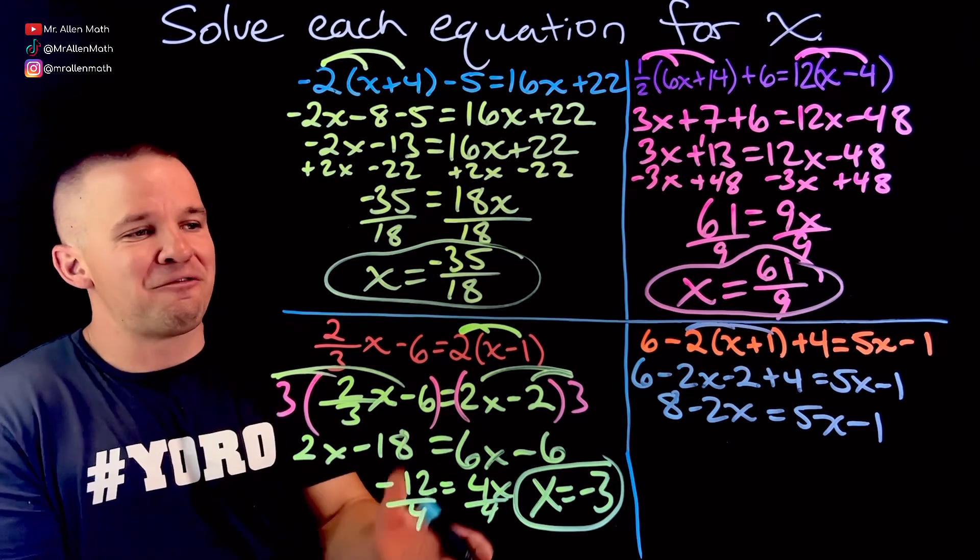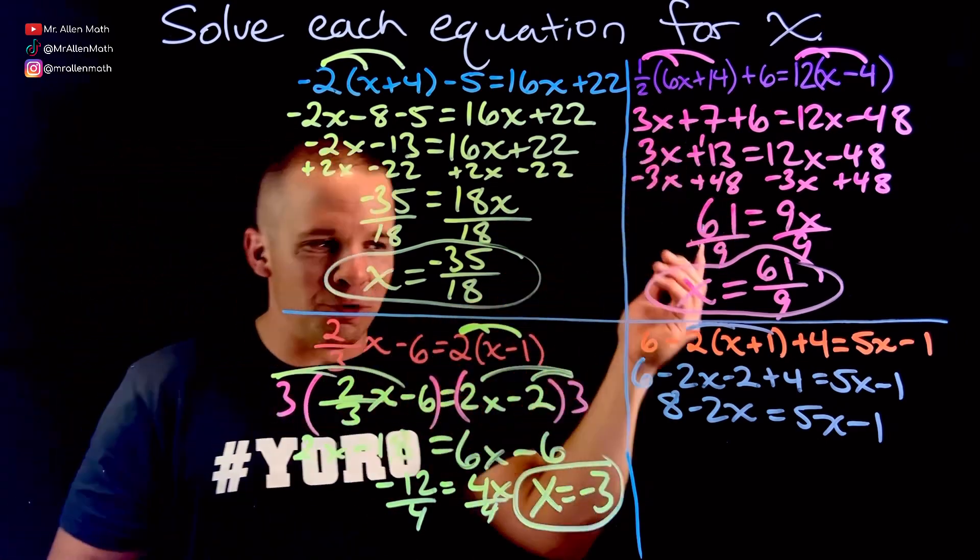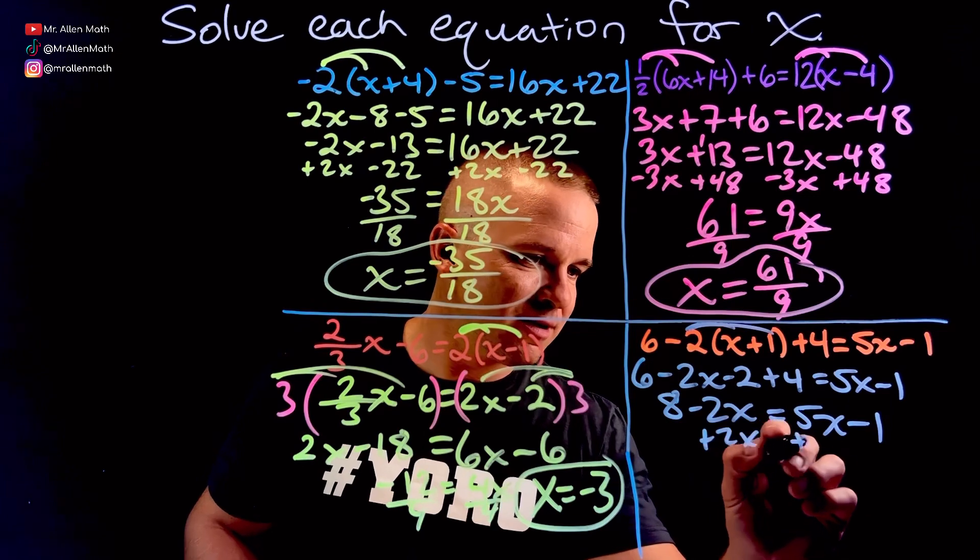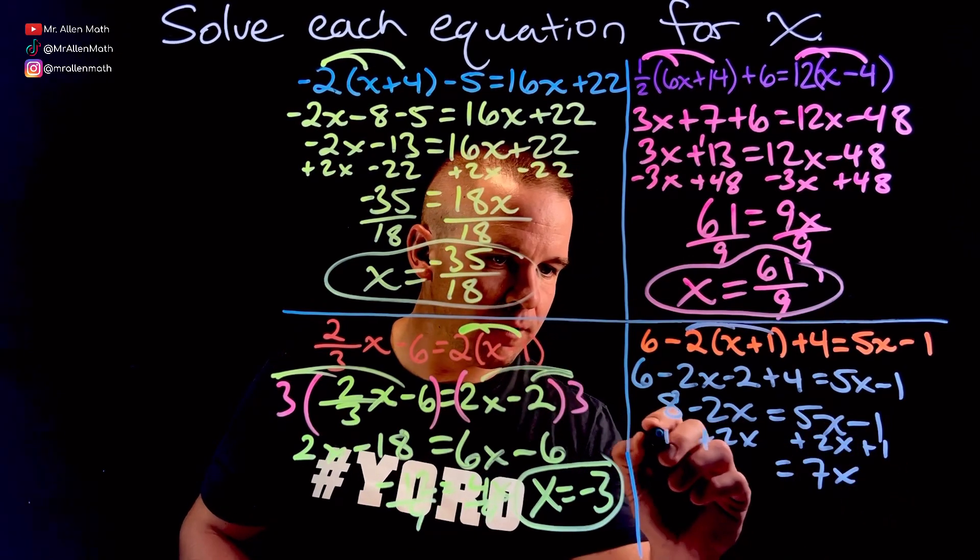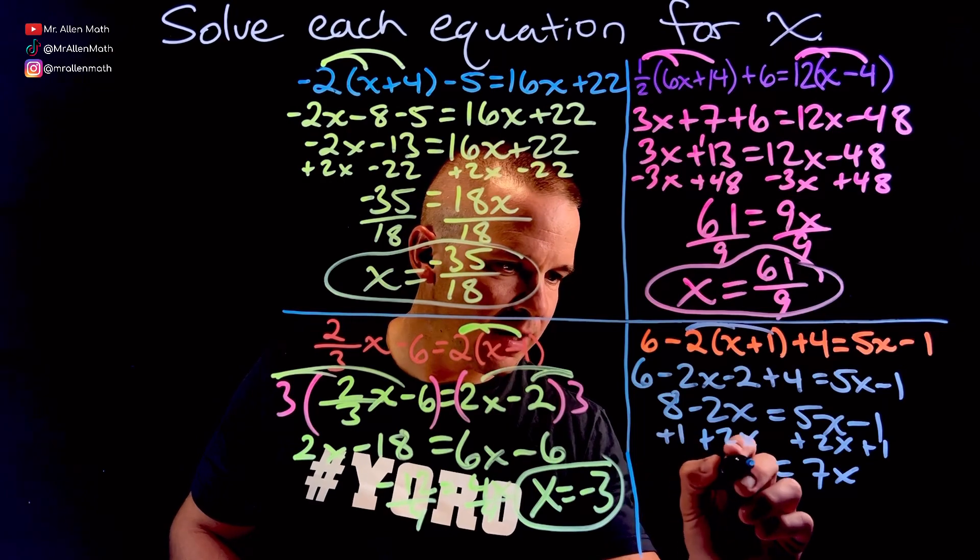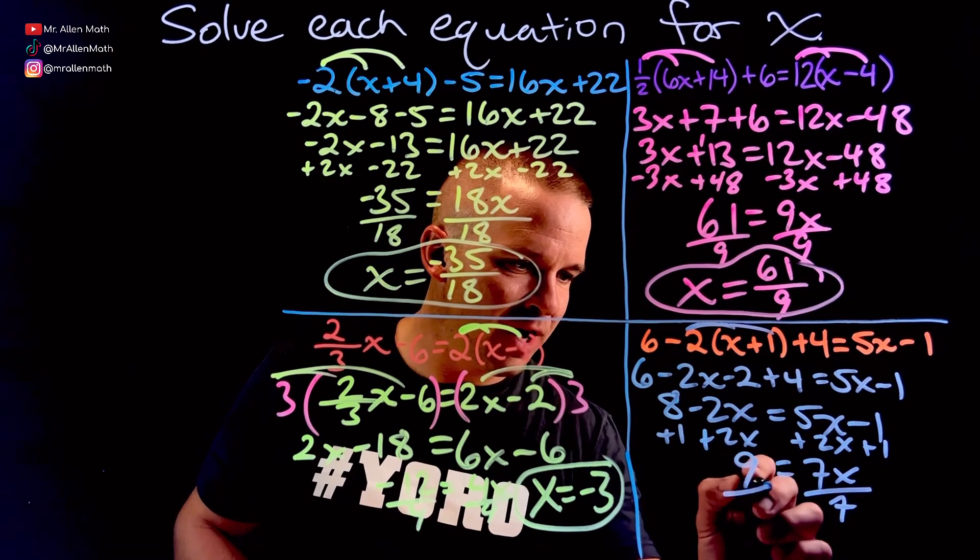Every single one of these, I have the larger x over here. So we'll just keep rolling with it. I'm going to add two x. I get seven x. Add the one. I get nine.